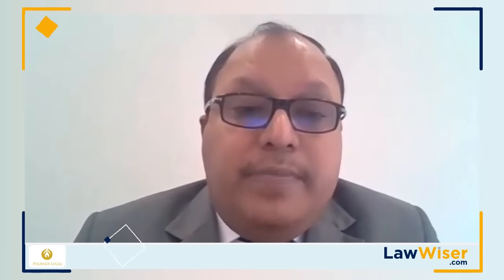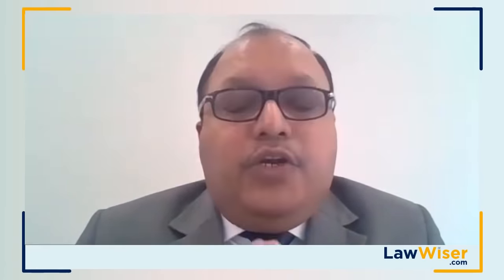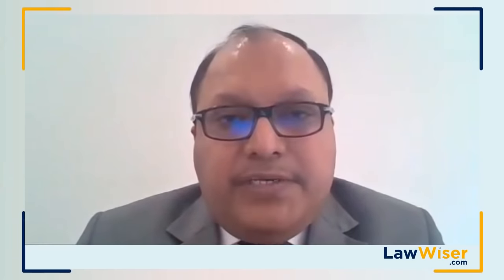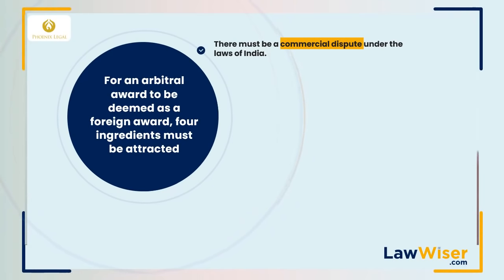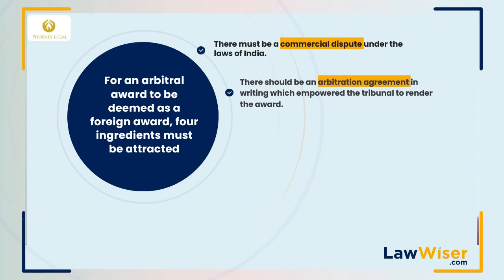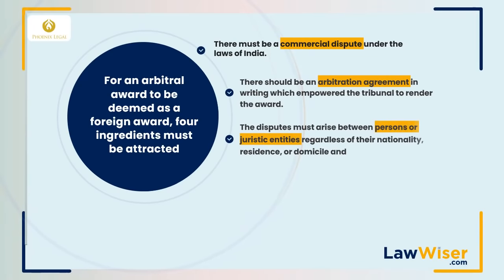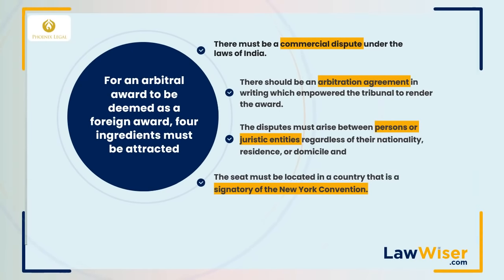What are the ingredients of a foreign award to be recognized under Part 2 of the Arbitration and Conciliation Act? When two Indian parties have a foreign seat of arbitration, the award rendered would be a foreign award. The Supreme Court held that the foreign award must pass four parameters: first, there must be a commercial dispute under the laws of India; second, there must be an arbitration agreement in writing empowering the tribunal to render the award; third, the dispute must arise between parties or juristic entities regardless of their nationality or residence; fourth, the seat must be located in a country that is a signatory to the New York Convention.